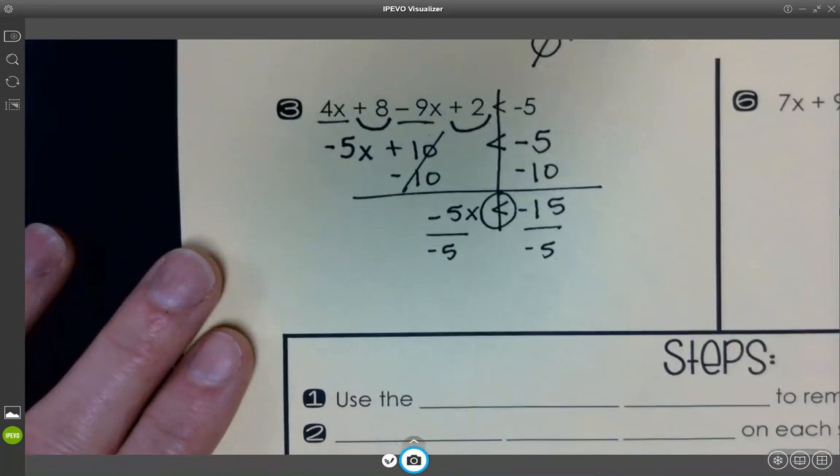Now solve it out. So, I'm left with negative 5x is less than negative 15. I am going to divide by a negative 5. So, our rule is you've got to flip that sign anytime you divide both sides by a negative. So, instead of it being less than, it's going to be greater than.